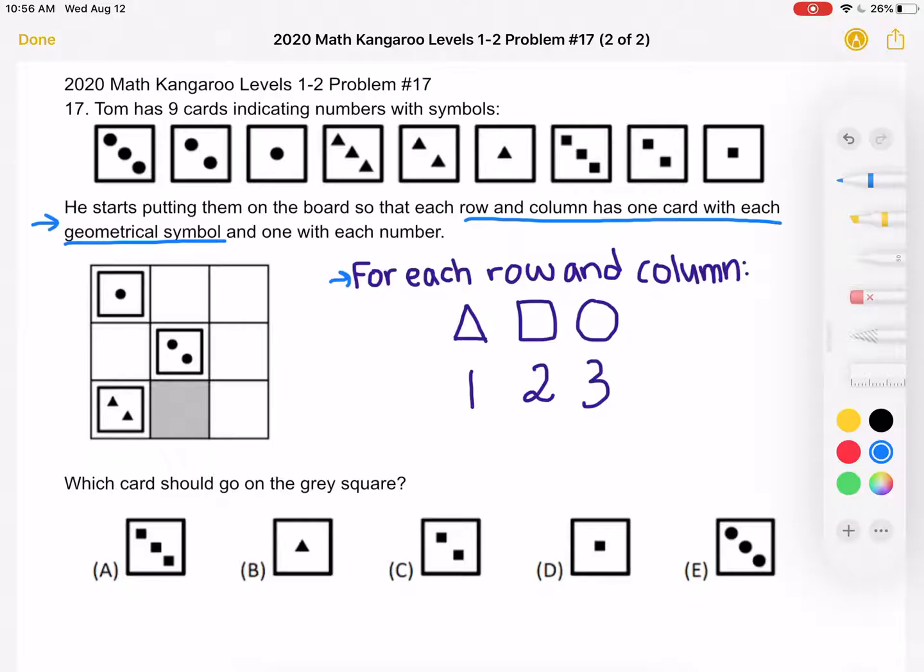So each row and column must have triangles, squares, and circles, and one with each number. So we're going to have one, two, and three of those shapes for each row and column.